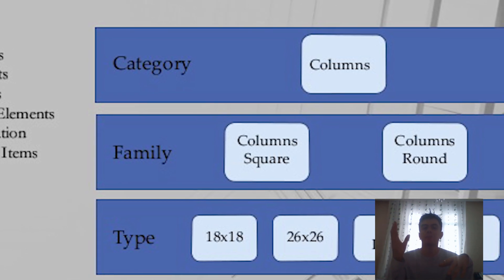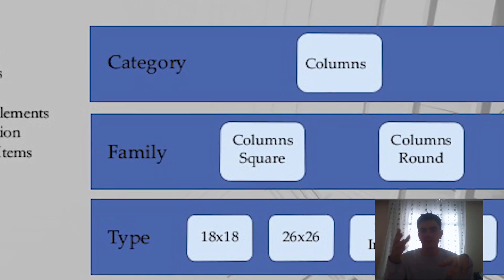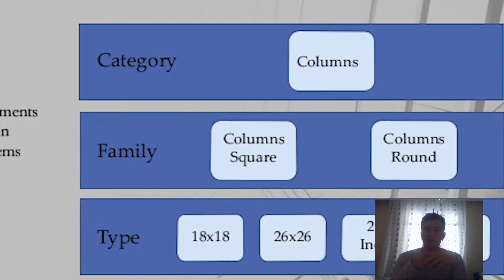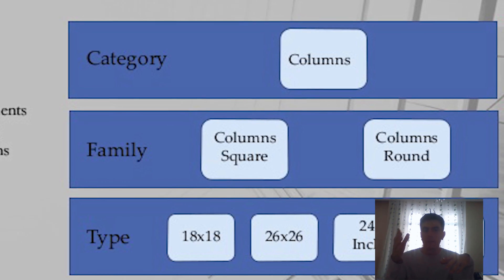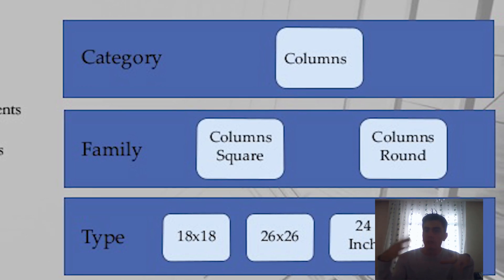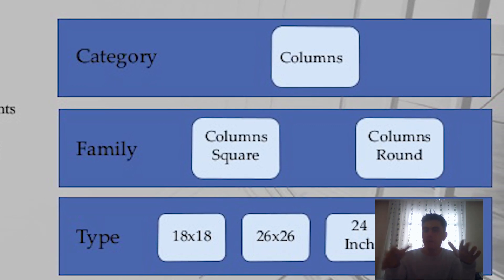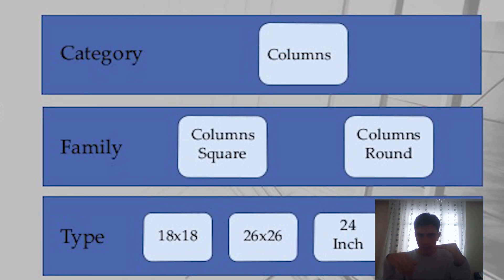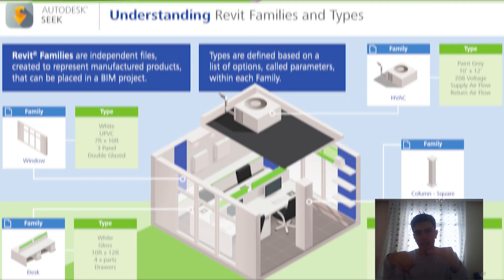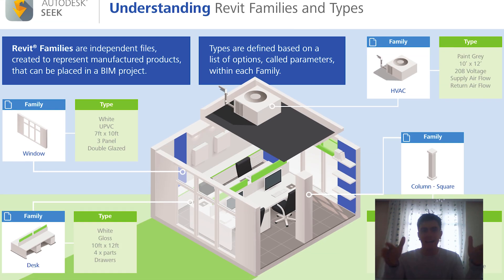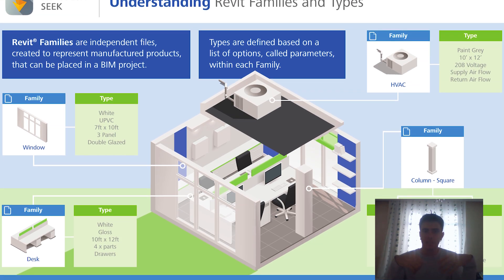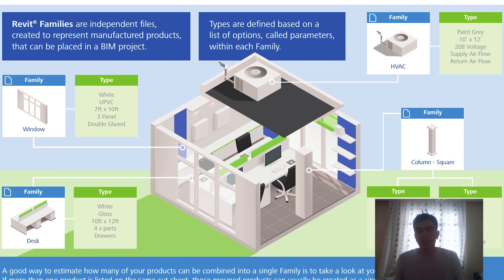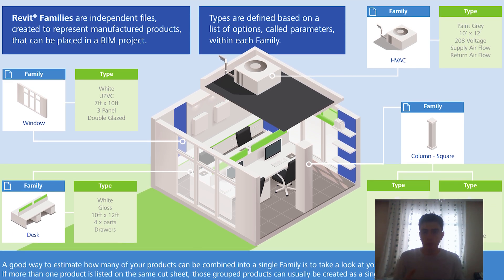Model kategorilerine örnek olarak duvarlar, kapılar, zeminler, merdivenler verilebilir. Annotasyon yani ek açıklama kategorileri ise metinler, boyutlar ve etiketler gibi öğeleri içerir. Hiyerarşinin bir sonraki seviyesi Family yani ailedir. Aileler, aynı genel görünümü ve davranışı paylaşan öğeler topluluğudur.